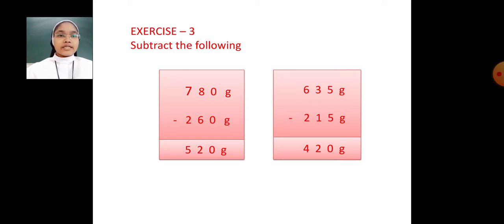Next. 635 gram minus 215 gram. 5 minus 5 is 0, 3 minus 1 is 2, 6 minus 2 is 4. 635 gram minus 215 gram, your answer will be 420 gram.